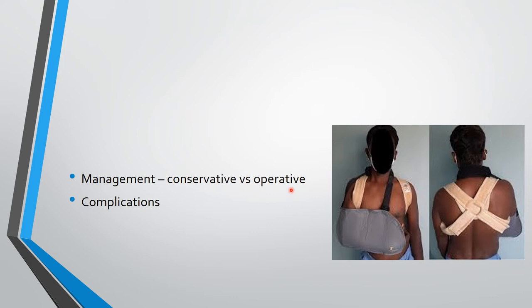Regarding conservative versus operative management: 80% of fractures unite with conservative management using an arm pouch and figure-of-eight bandage. The arm pouch supports the lateral third, which is pulled downward by gravity, while the medial third is pulled upward by the sternocleidomastoid muscle attachment. The figure-of-eight bandage is applied medially to keep the clavicle in place.